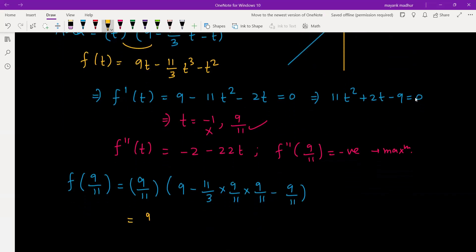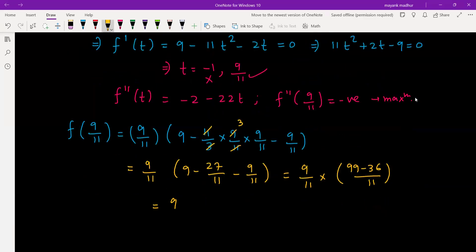Let's simplify this. It will be 9 by 11. This 11 and 11 we can cancel out, 3 and 9 we can cancel out. So 9 minus 27 by 11 minus 9 by 11. So this will turn out to be 9 by 11 into 99 minus 36 by 11.